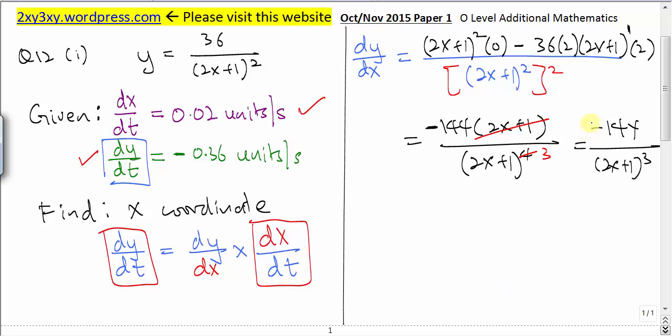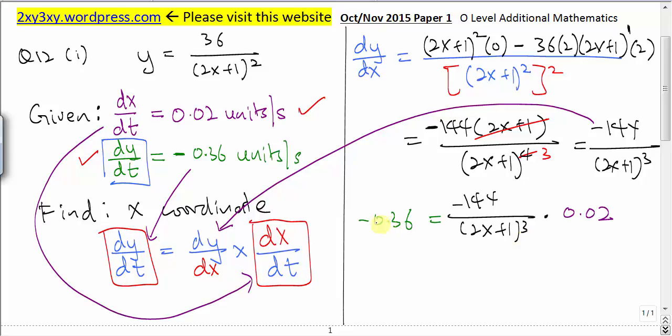Now I'm going to plug this expression into this equation here. We got all these numbers. Our aim is to find the x-coordinate. Let's make (2x+1) cubed the subject of formula by moving 0.02 over first, which gives us negative 18. Make (2x+1) to the power 3, which gives a value of 8, and therefore x gives a value of 0.5. Hence the x-coordinate of P is 0.5 at these instances.